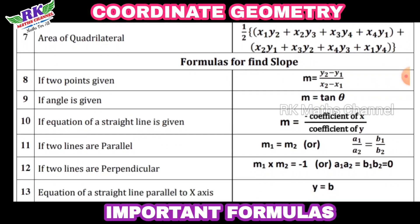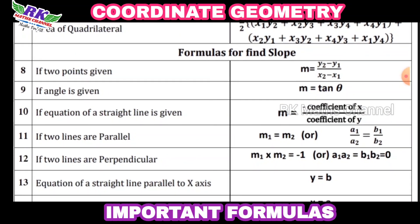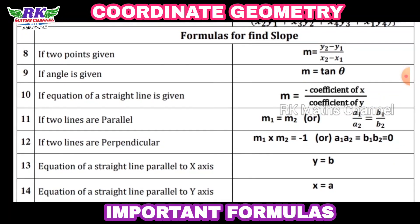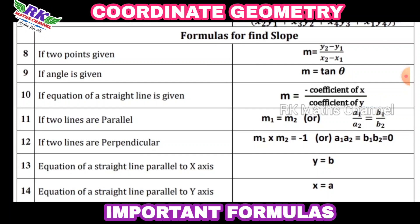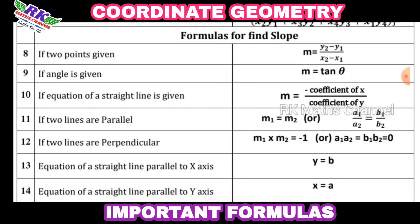Next are formulas for finding slope. Slope is the formula. If two points are given, slope M is equal to Y2 minus Y1 divided by X2 minus X1. If a point and an angle are given, the formula M equals the slope is used.